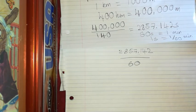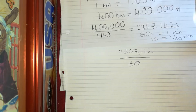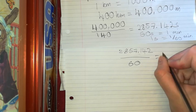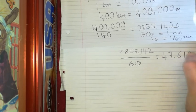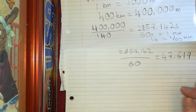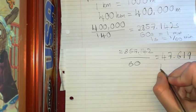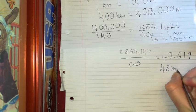So 2857.142 over 60, and I get 47.619. So it said correct to the nearest minute. So it's going to be 48 minutes for it to reach land.